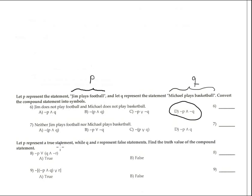Number seven: 'neither' indicates negation. 'Neither Jim plays football nor Michael plays basketball' becomes negation of the disjunction, written as negation open parenthesis (Jim plays football disjunction Michael plays basketball). 'Nor' represents disjunction. This corresponds to option C.